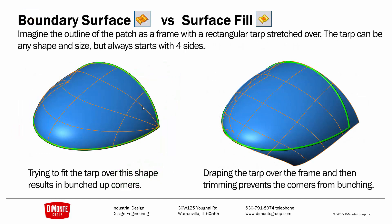I'm often asked: what's the difference between boundary surface and surface fill? Imagine the outline of the patch as a frame with a rectangular tarp stretched over. The tarp can be any shape and size, but always has to start with four sides. In the example on the left, we have this tarp, and when we try to stretch it to fit this perimeter, it gets bunched up in the corner here. These orange lines represent the flow of the surface, and we can see that they terminate here — this is called a degenerate point. Degenerate points are something we try to avoid whenever possible, as they cause problems with fillets, with shells, and with offsets.